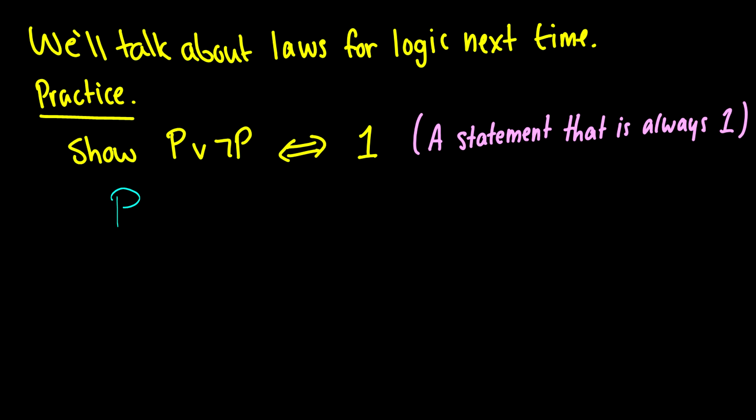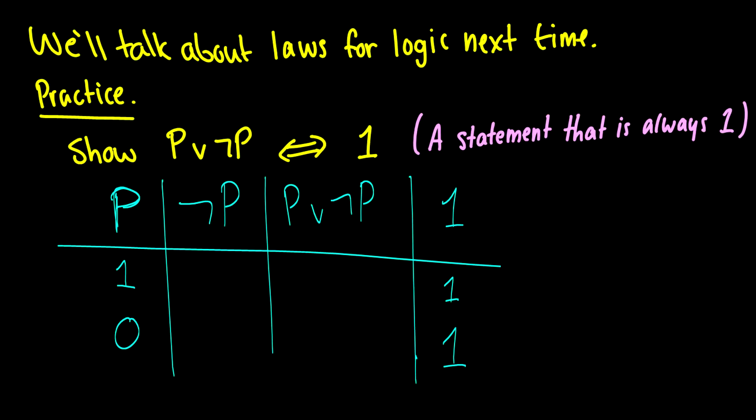We need to set up a truth table. So first, we need to find the values for P, then we need to find the values for ¬P. And then we need to finish with P∨¬P. And we should probably put our one truth table there. And we know that one is always going to output a one. That's how we defined it. So we need to make P. So we have a one and a zero. ¬P is going to be the opposite values. And P∨¬P, at least one of them has to be true. So the first line is going to be true because P is true. And the second line is going to be true because ¬P is true.